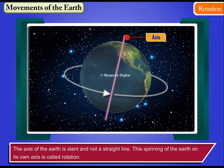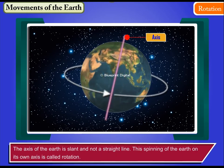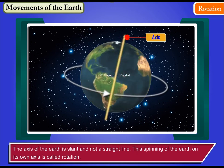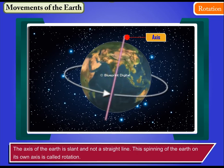The axis of the Earth is slant and not a straight line. This spinning of the Earth on its own axis is called rotation.